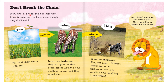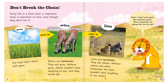Every link in a food chain is important. Grass is important to lions even though they don't eat it. This food chain starts with grass, which is eaten by the zebras. Zebras are herbivores — they eat grass. Without grass, zebras wouldn't have anything to eat and they would die. The zebras are eaten by the lions. Lions are carnivores — they eat zebras. Without zebras and other herbivores, the lions wouldn't have anything to eat either. As the lion says: I don't eat grass, but without grass there would be no zebras for me to eat.